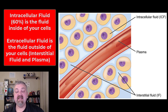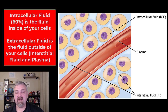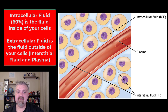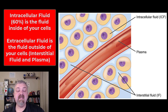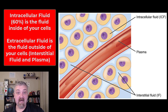Intracellular fluid is the fluid inside your cells, and as you'll see in just a moment, more than half — about 60% of your body water — is inside your cells. That's intracellular fluid. Extracellular fluid is all the fluid that's outside of and surrounds your cells, and that can be broken down into two compartments: interstitial fluid is the fluid between your cells, and plasma is the fluid portion of your blood.